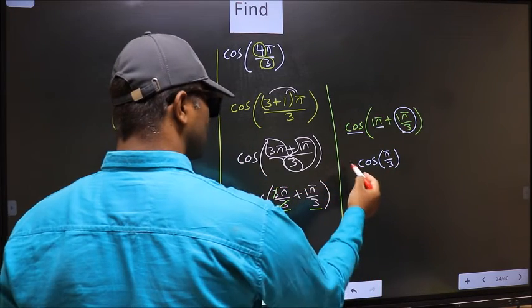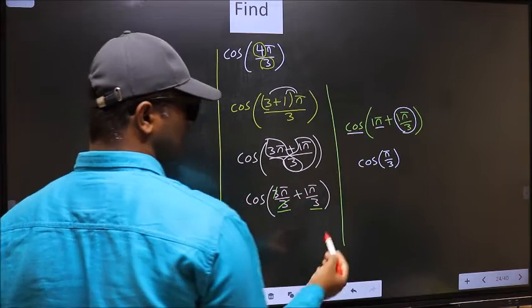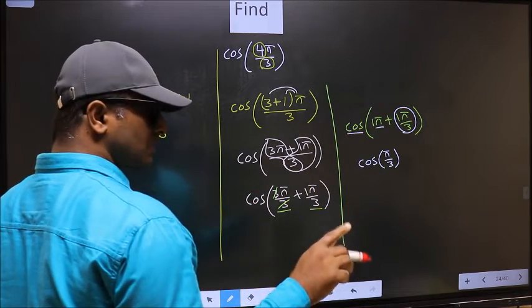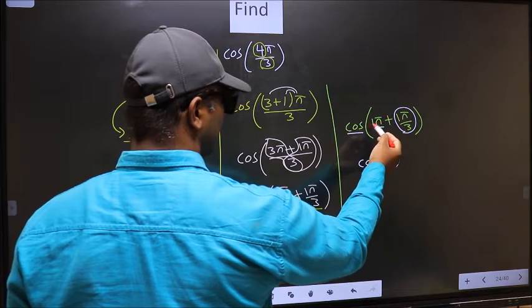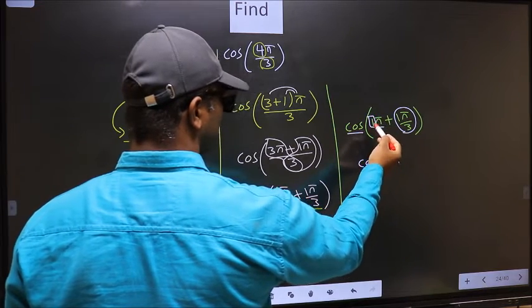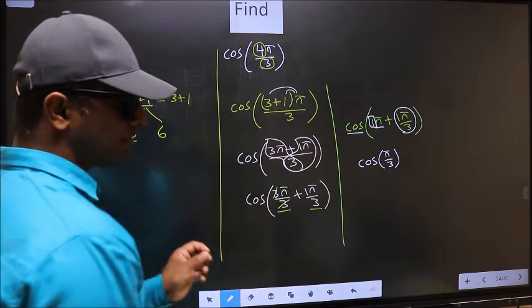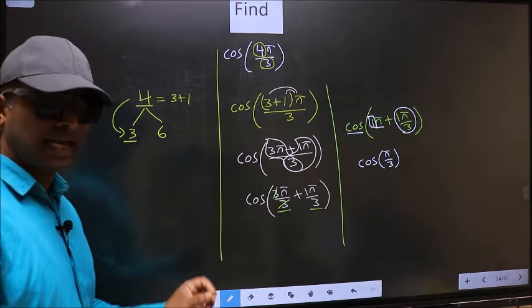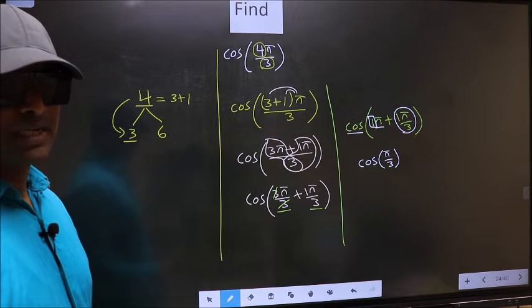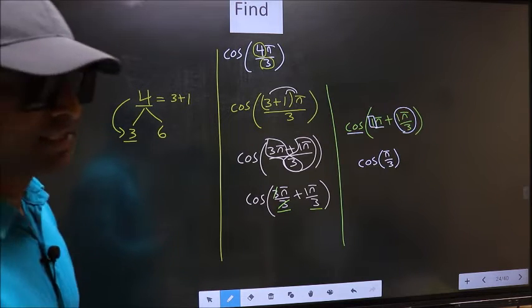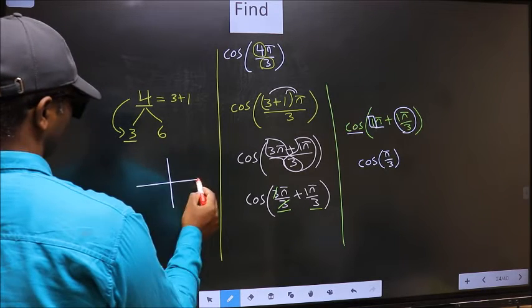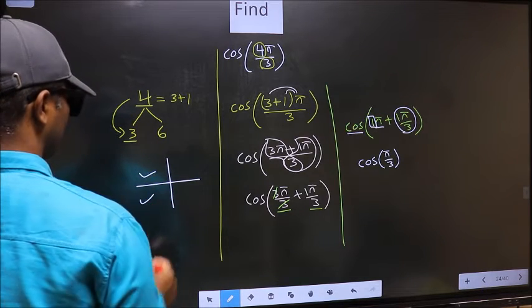Now the question is, will we get here plus or minus? To answer that, we should look at the number before π, which is 1. And 1 is odd. And all the odd multiples of π, they lie in second or in third quadrant.